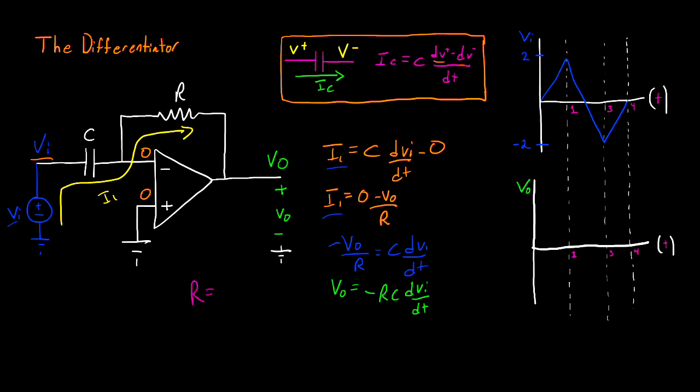So now let's say that R is equal to 1 kilohms, and C is equal to 500 microfarads. K is 10 to the 3, and micro is 10 to the negative 6. So if we multiply this, what we'll have is Vo is equal to negative 1 over 2 dVi dt. So the output voltage is the derivative of our input voltage multiplied by negative 1 over 2.